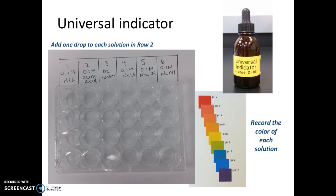The next test uses universal indicator. Fill row two on your test plate two-thirds of the way full with solutions one through six, then add one drop of universal indicator to each well in row two. You'll get a colorful response — the color chart is similar to that of the pH paper, with strong acids on the red end and strong bases appearing blue and purple. Record the color of each solution in row two.